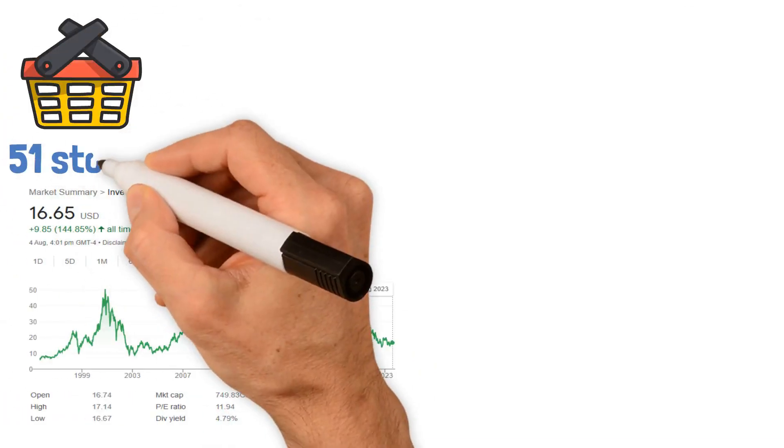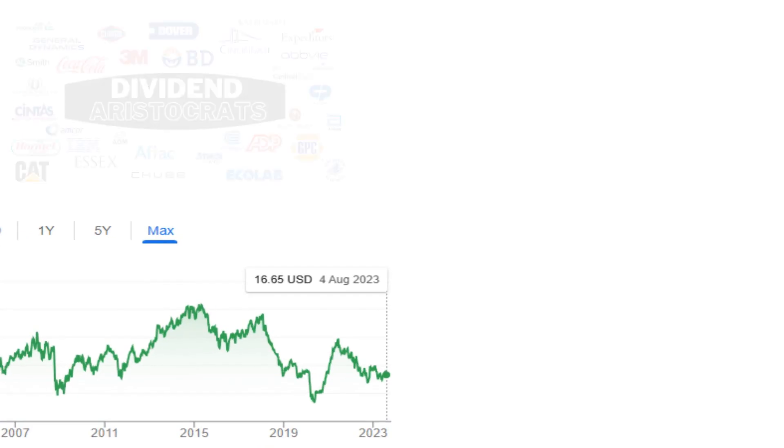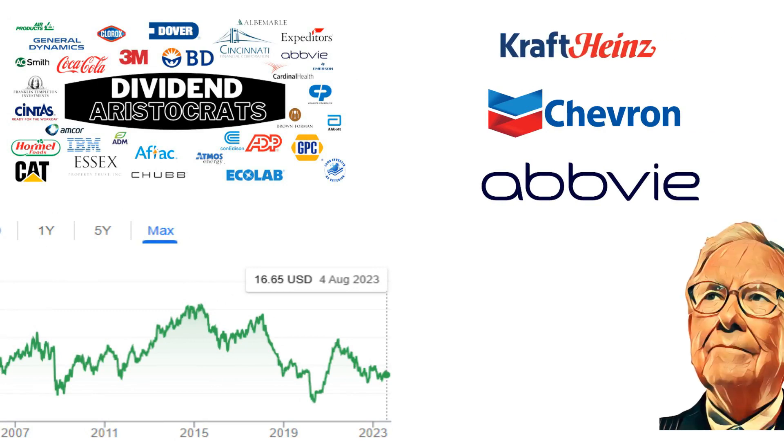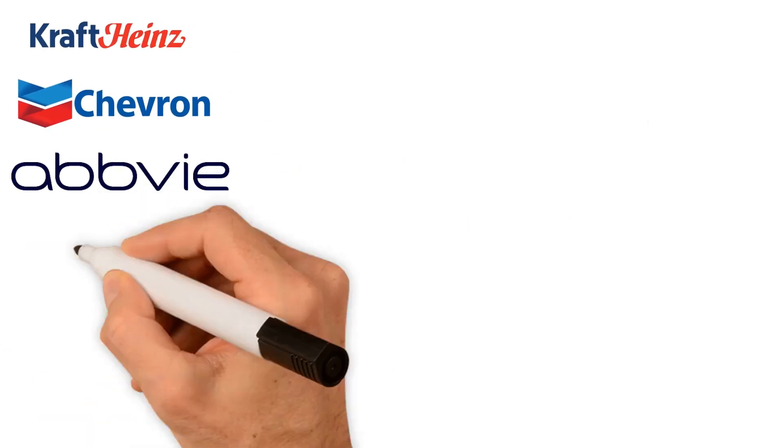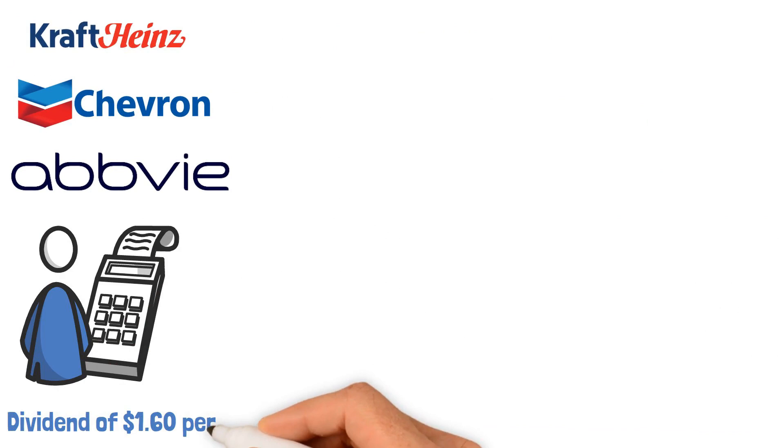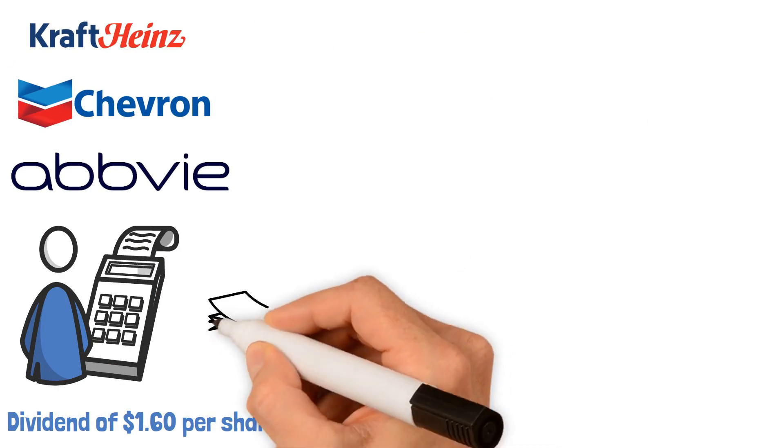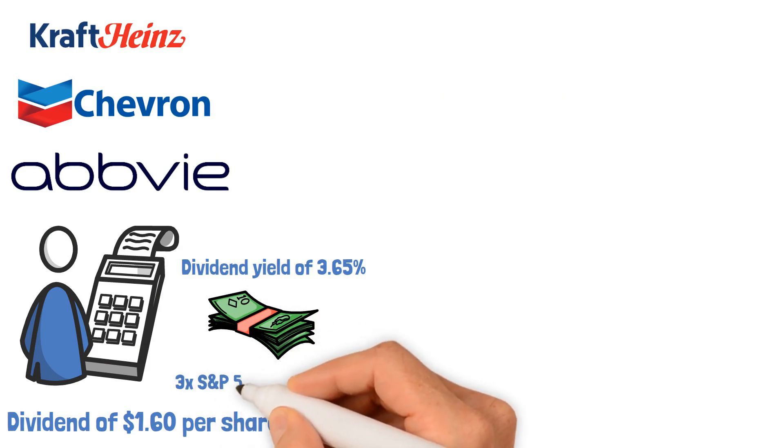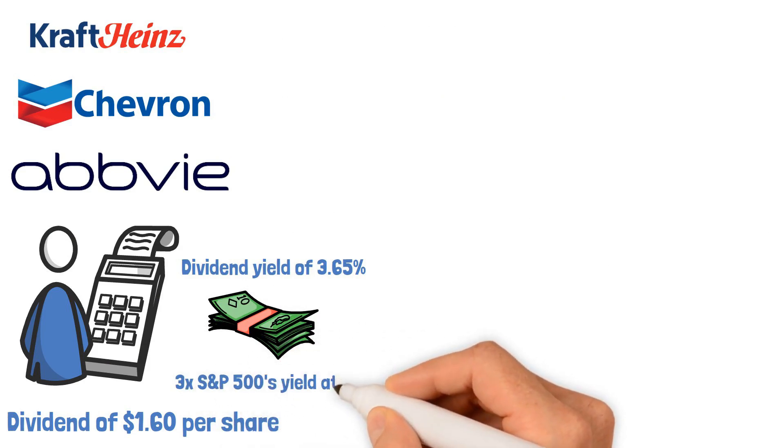Among its bucket of 51 stocks, investors can find reputable dividend aristocrats, including well-known favorites like AbbVie, Chevron, and Kraft Heinz, which are favored by the legendary investor Warren Buffett himself. These influential holdings contribute to the fund's annual dividend of $1.60 per share, boasting an impressive dividend yield of 3.65%, more than three times that of the S&P 500's yield at 1.3%.